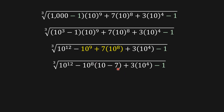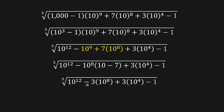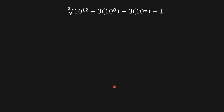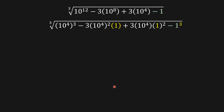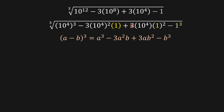From here I can see that we have a perfect cube. Comparing what we have with the standard form, we can conclude that we have ten to the four minus one. So our a is ten to the four and our b is one.